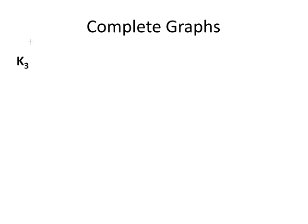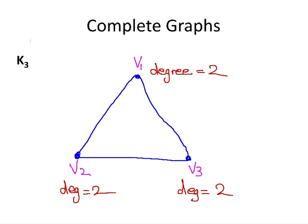Now let's look at K3. There are three vertices, V1, V2, V3, and for each of these vertices, they all have degree 2. And the number of edges is 3.